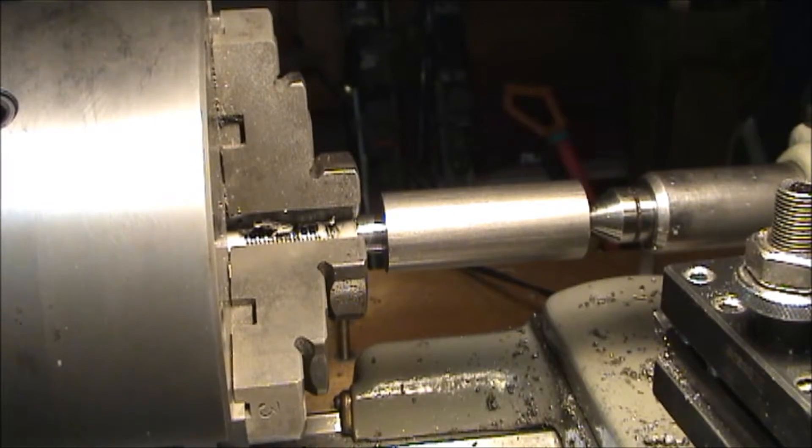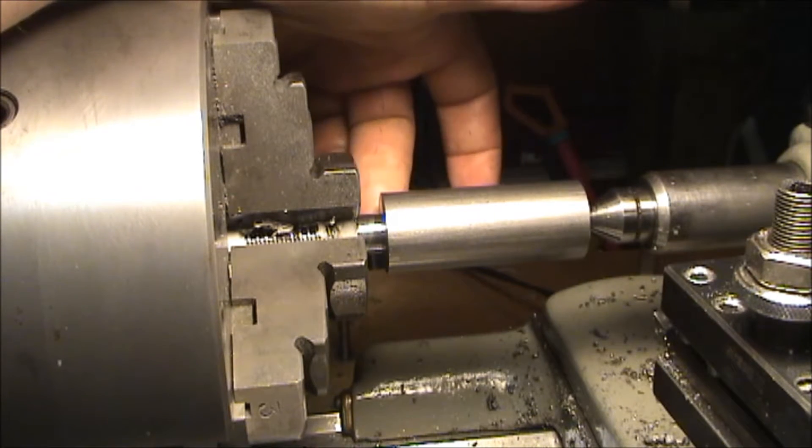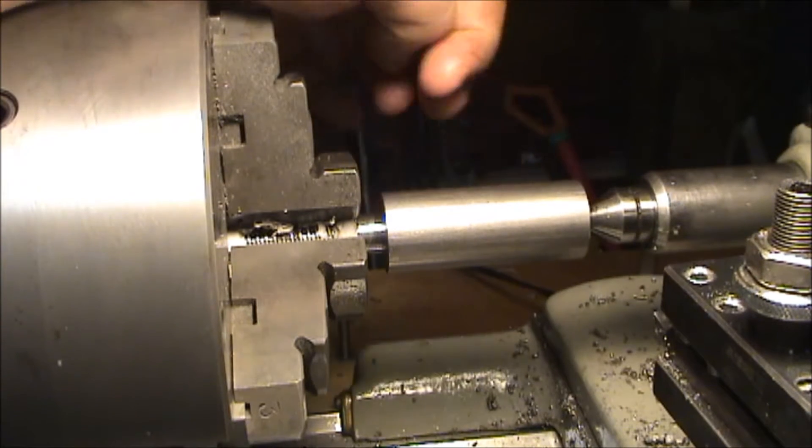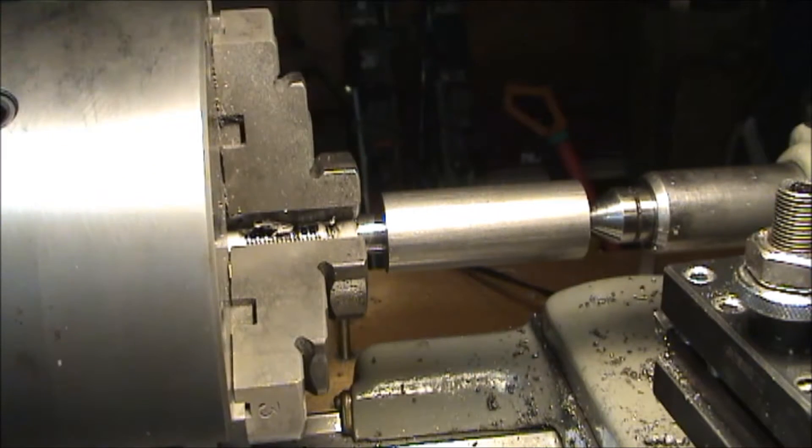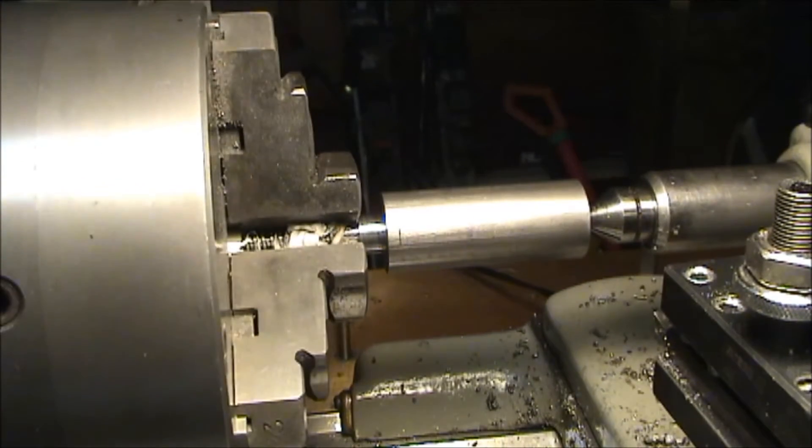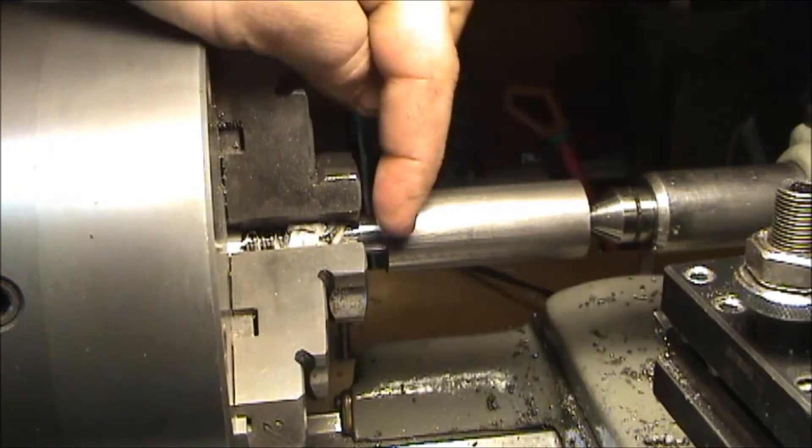Alright, we're back in the chuck here, ready to machine the other end of our compound screw. We're gonna have to leave a register here of 0.125, which I have marked out with a little scribe mark already, so I'm gonna machine this down to that.